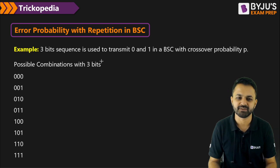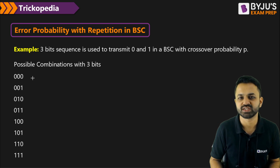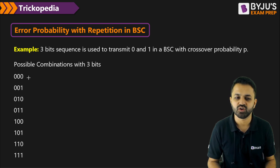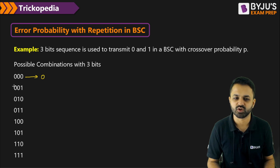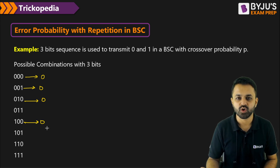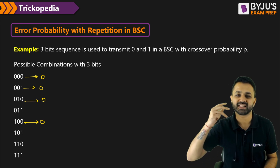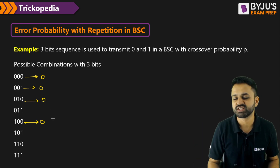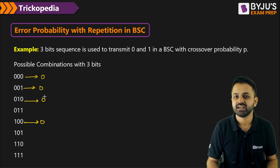For example, if I am transmitting 0 and instead of transmitting a single 0, I am transmitting 3 zeros, then I will check the number of 0s and 1s among those 3 bits. Suppose I receive these 8 possible combinations. I will take a decision in favor of 0 when the number of 0s is greater than the number of 1s — that covers 4 of those combinations. So 4 times I am going to take the decision correctly in favor of 0.